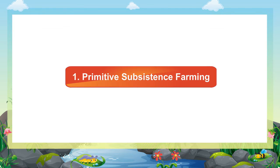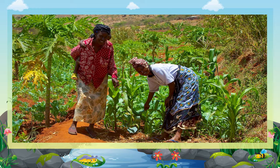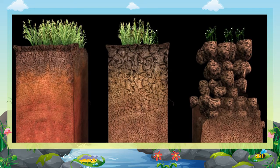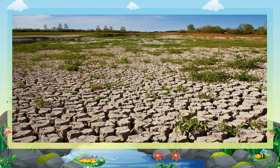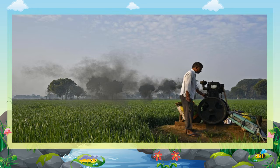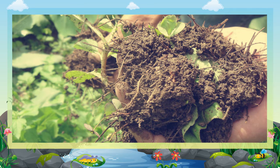One: Primitive subsistence farming. Primitive subsistence agriculture is practiced on small patches of land with the help of primitive tools like hoe, digging sticks, etc. When the fertility of the soil decreases, the farmer leaves that land and takes up another piece of land for cultivation. This type of farming depends upon monsoon, natural fertility of the soil, and suitability of other environmental conditions to the crop grown.